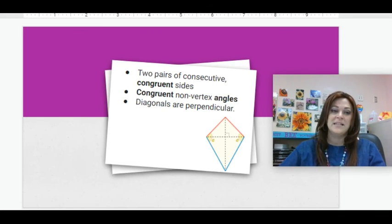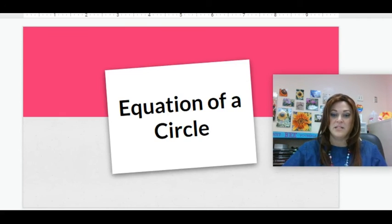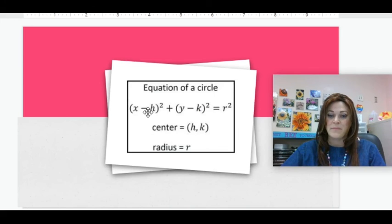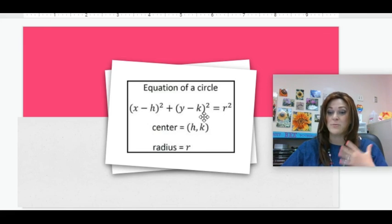Now we have one more new thing in this Topic 9, and that is the equation of a circle. You will be using this equation in geometry as well as Algebra 2 and beyond, so this is one of those formulas you really need to know. So it is (x - h)² + (y - k)² = r². Now this is derived from the Pythagorean theorem, and we can go over that in another video.